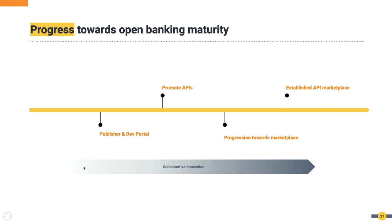The idea here is that you build a portal — starting with the publisher and dev portal where you have your APIs, promote your APIs, let consumers try them out, discover them, and start using them. Initially you might have only your own APIs, but you can then open this up to other types of partners and providers as well.